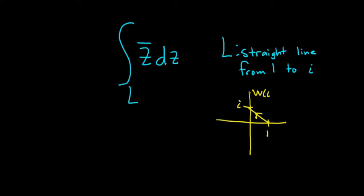W of t is going to be, and this works for straight lines, it's where you start plus, so we start at 1, plus t times where you finish minus where you start. So again, it's where you start plus t times where you finish minus where you start. And t here, using this method, is in the interval 0, 1.